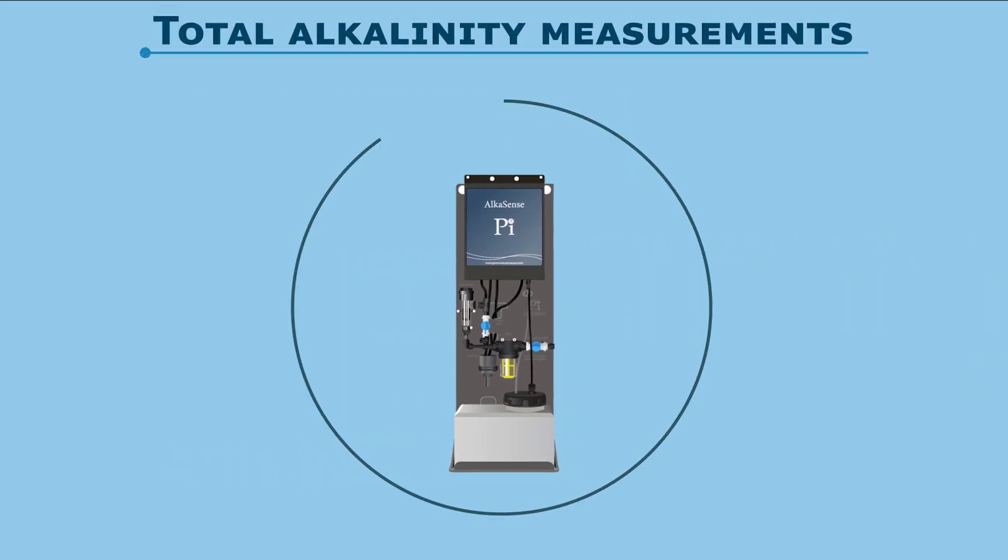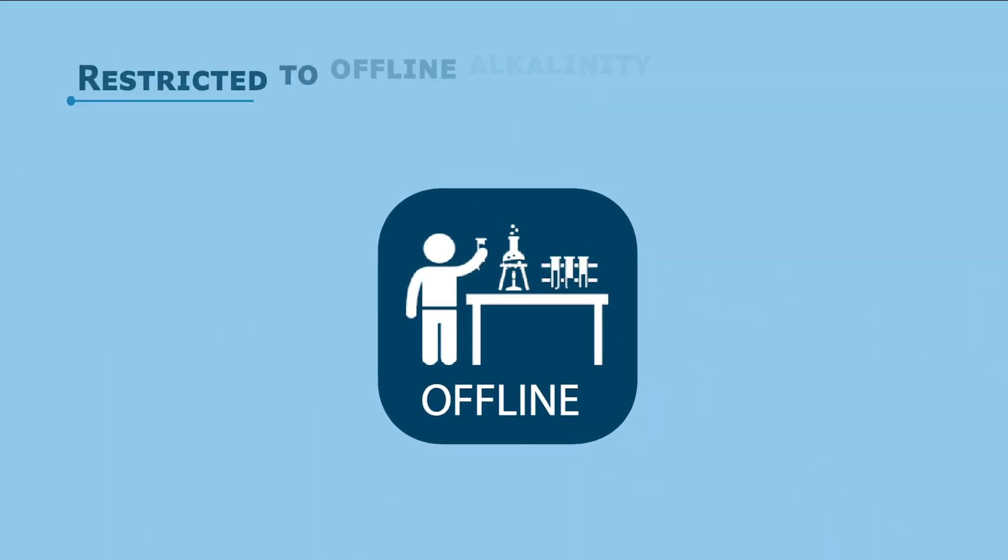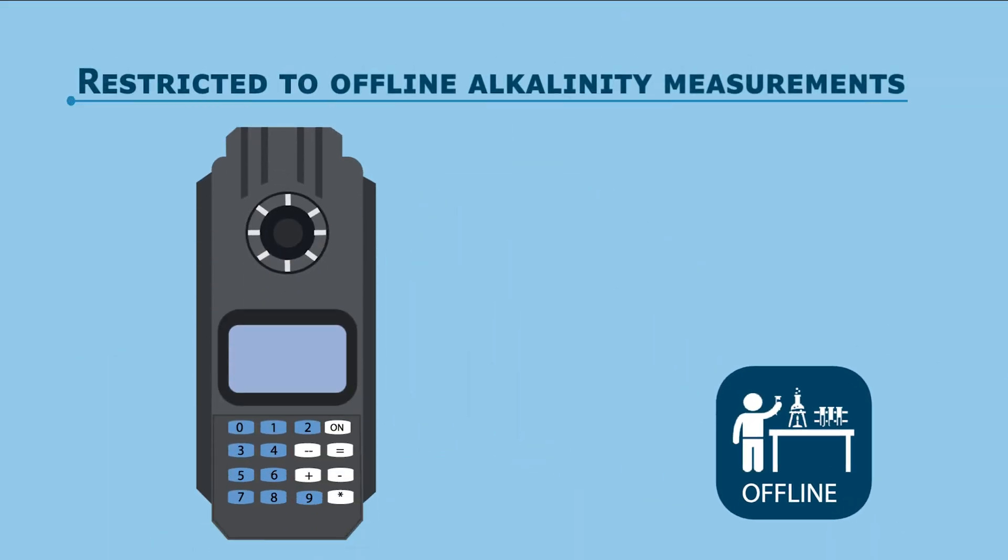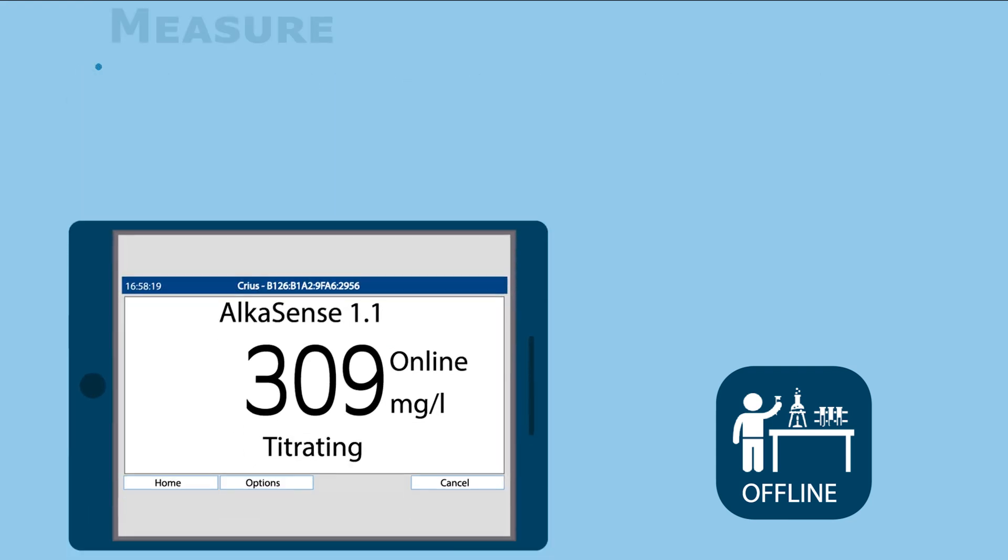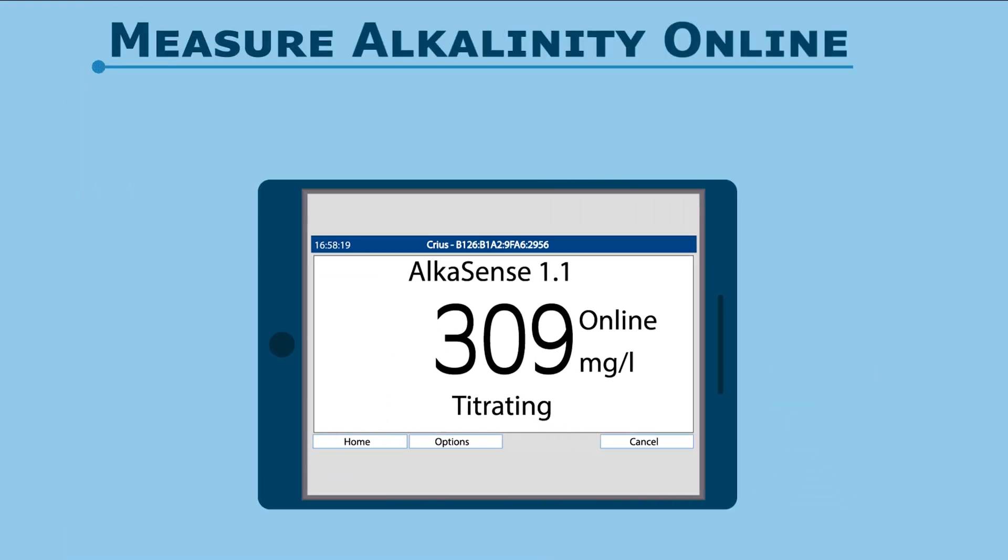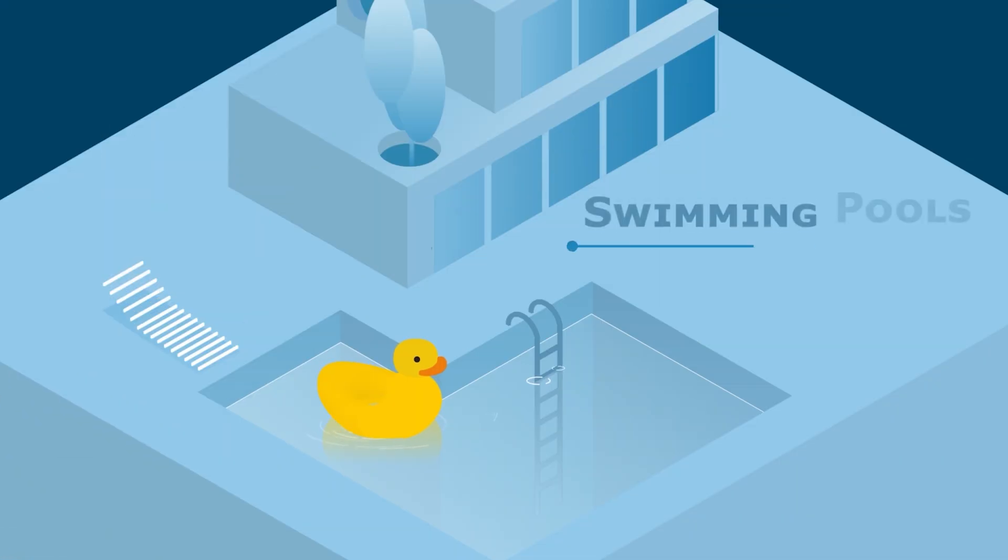The AlkaSense will make all total alkalinity measurements simpler, cheaper, more accessible, and more reliable and robust. In turn, this will enable operators who have previously been restricted to offline alkalinity measurements to measure alkalinity online with the automation that opens up, such as in swimming pools, water treatment works, and cooling towers.